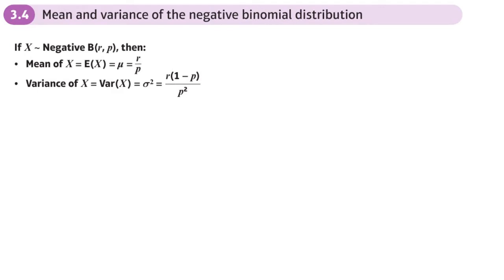This is the fourth and final section of the geometric and negative binomial distributions chapter. Here we are finding the mean and the variance, which is in the formula book on page 23. Let's start with the mean.